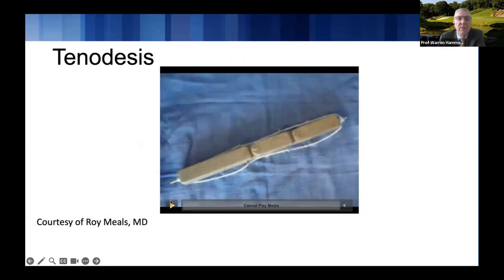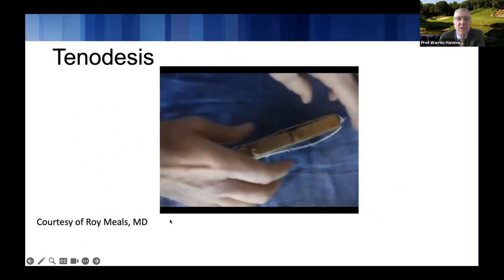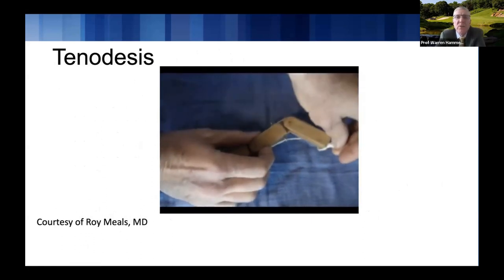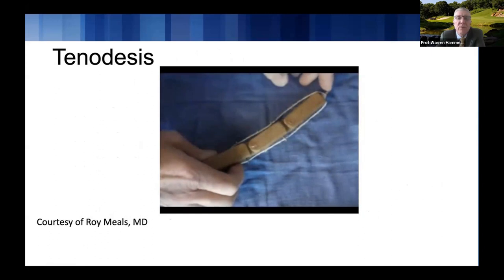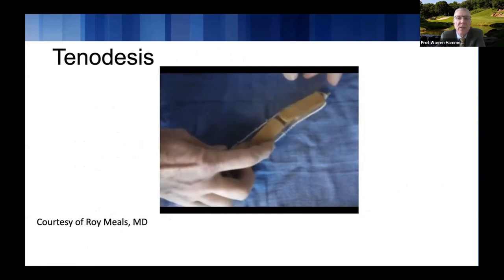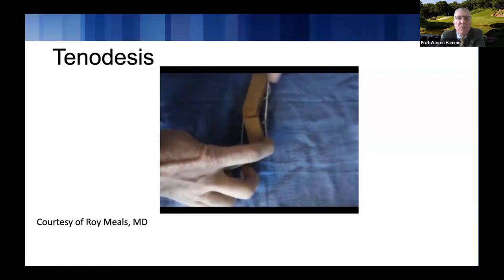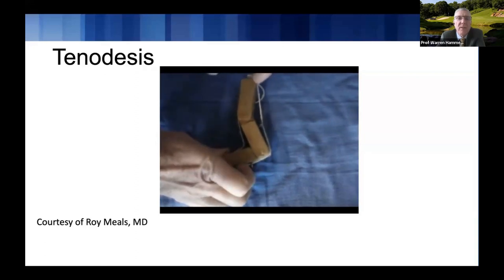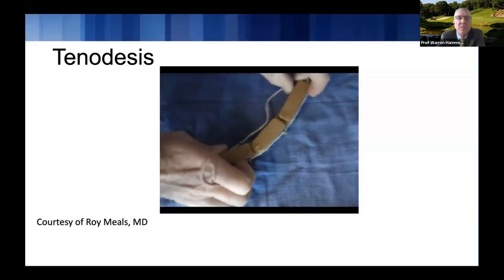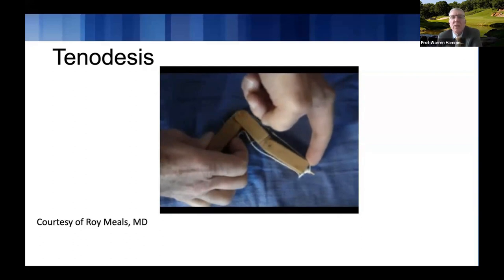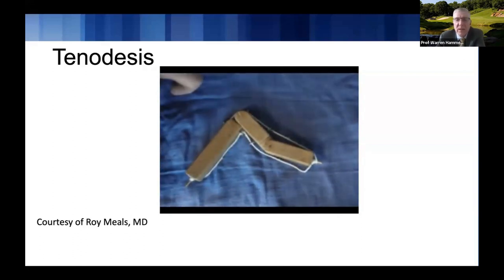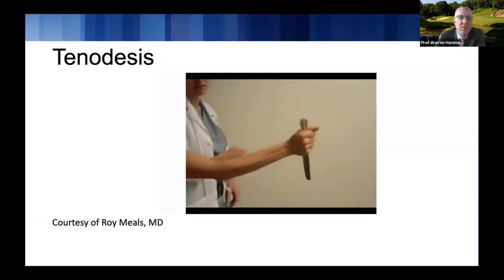This is an example given to me by Roy Mills, a hand surgeon from California. It shows how two joints move independently, and when you try to move them together, you can see what happens if there's a tether. If you create a tether on one side and try to move the other side, it won't move because it's tethered. Moving one side into extension will make something else move into flexion, and vice versa — a way to augment the excursion of a muscle with less absolute excursion.